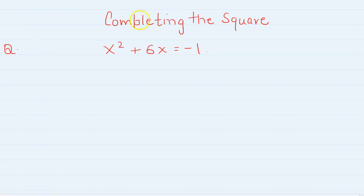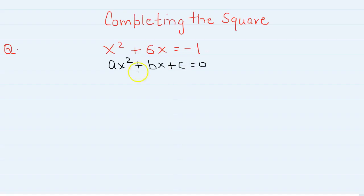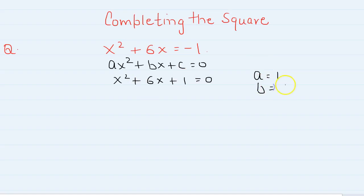First, let's write this question in the form of ax squared plus bx plus c is equal to 0. So the question will become x squared plus 6x plus 1 is equal to 0. So we have a is equal to 1, b is equal to 6, and c is equal to 1.